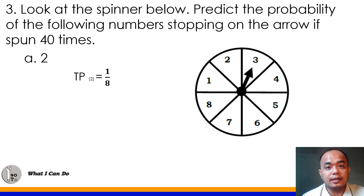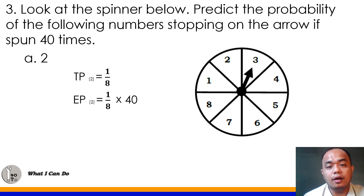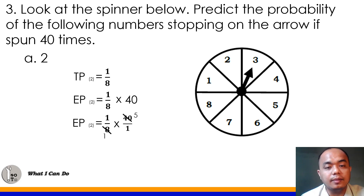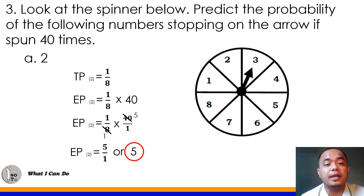We multiply 1/8 by 40, since the spinner is spun 40 times. Convert 40 to 40 over 1. Using cancellation, the GCF of 8 and 40 is 8: 8 divided by 8 is 1, and 40 divided by 8 is 5. Then 1 times 5 is 5, over 1 times 1 is 1 — so that's 5. We can predict that the number 2 will appear 5 times when the spinner is spun 40 times.